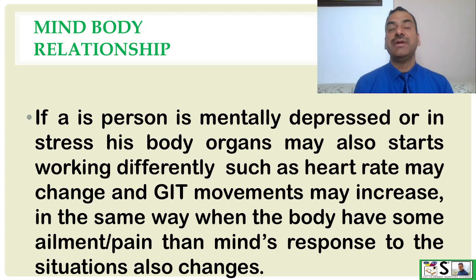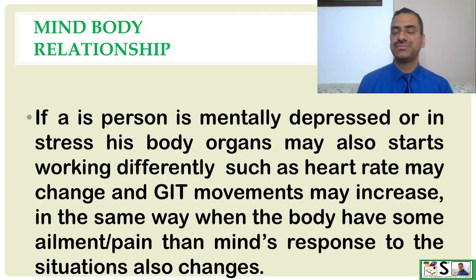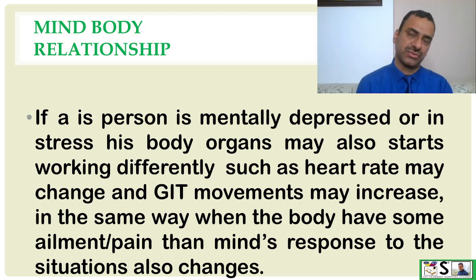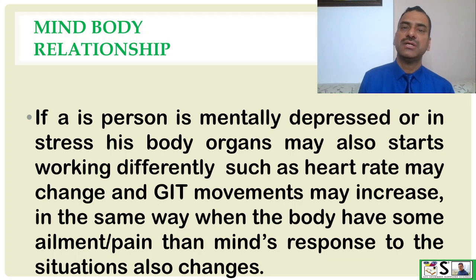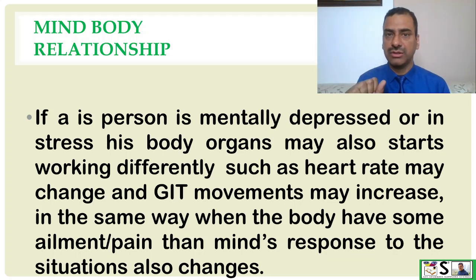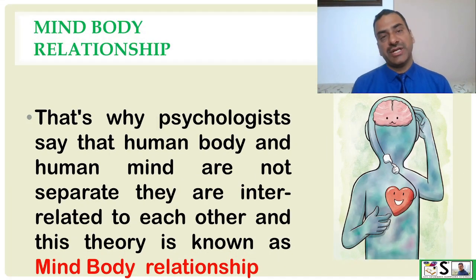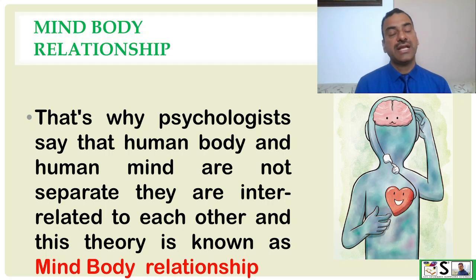If a person is mentally depressed or under stress, the body organs may also start responding differently — for example, heart rate may increase or change, and gastrointestinal movement may change due to hormones released by mental stress or tension. In the same way, when there is some ailment or pain in the body, the mental situation and thinking power of the person also change. With this example we can understand that mind and body affect each other as well as human behavior. That is why psychologists see that the human body and mind are not separate — they are interrelated, and this concept is known as mind-body relationship.